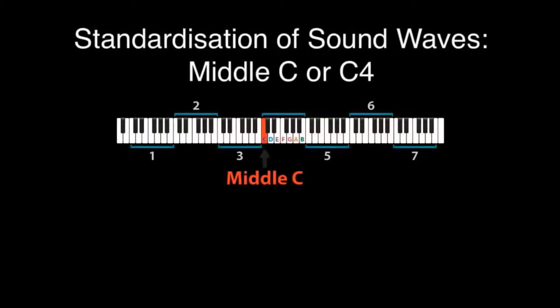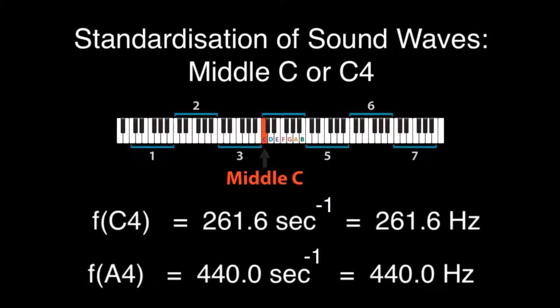As a reference, what musicians call middle C, that is C of the middle octave of an 88 key piano, is a pressure wave of frequency 261.6 Hz.